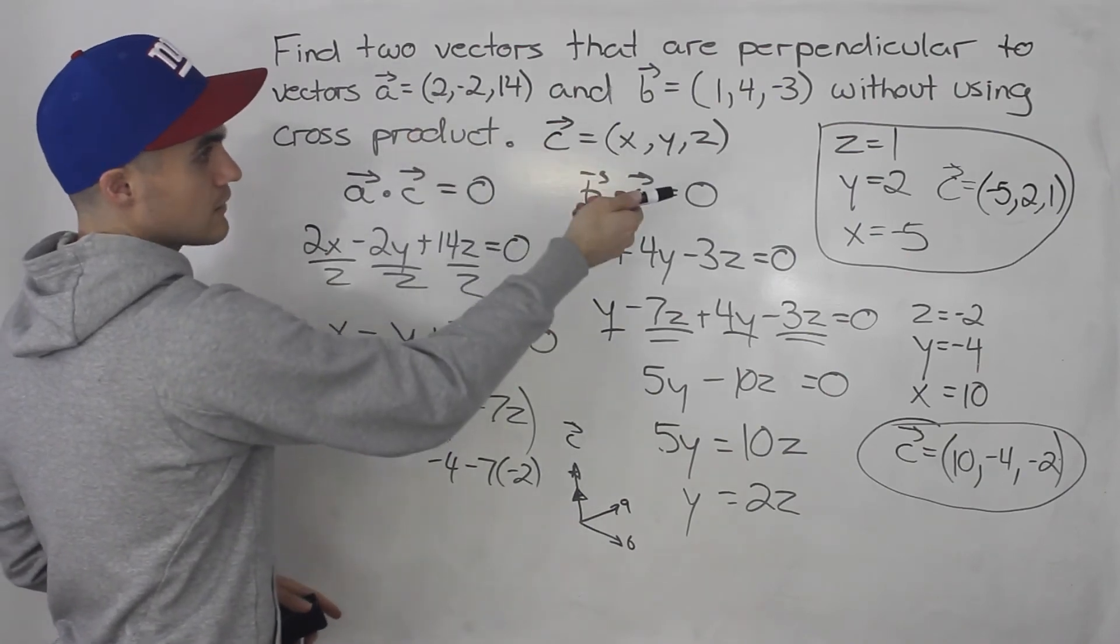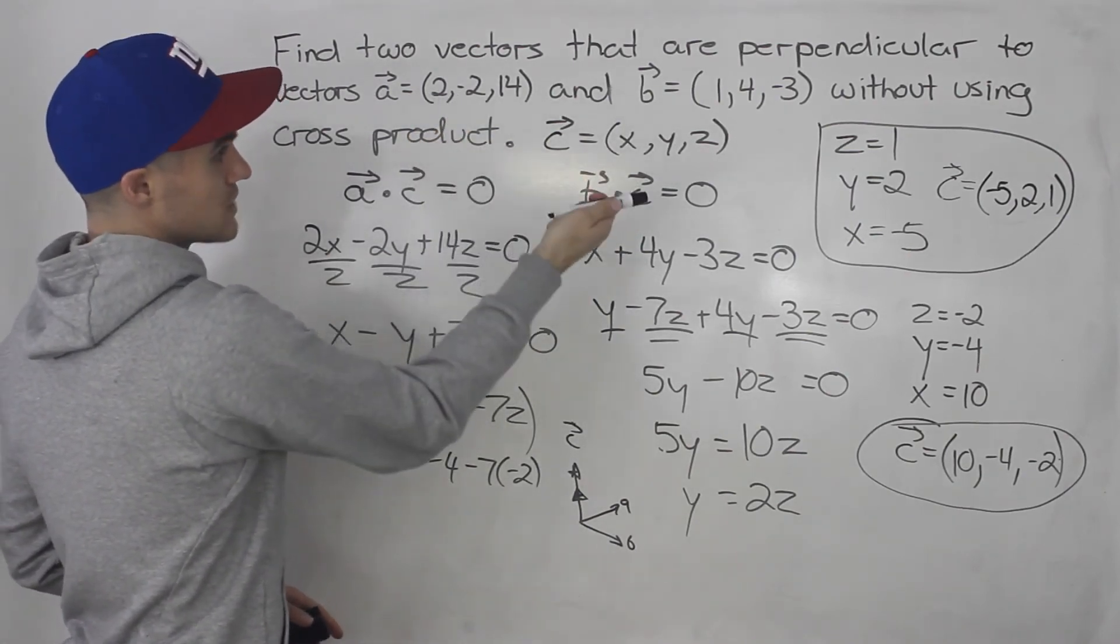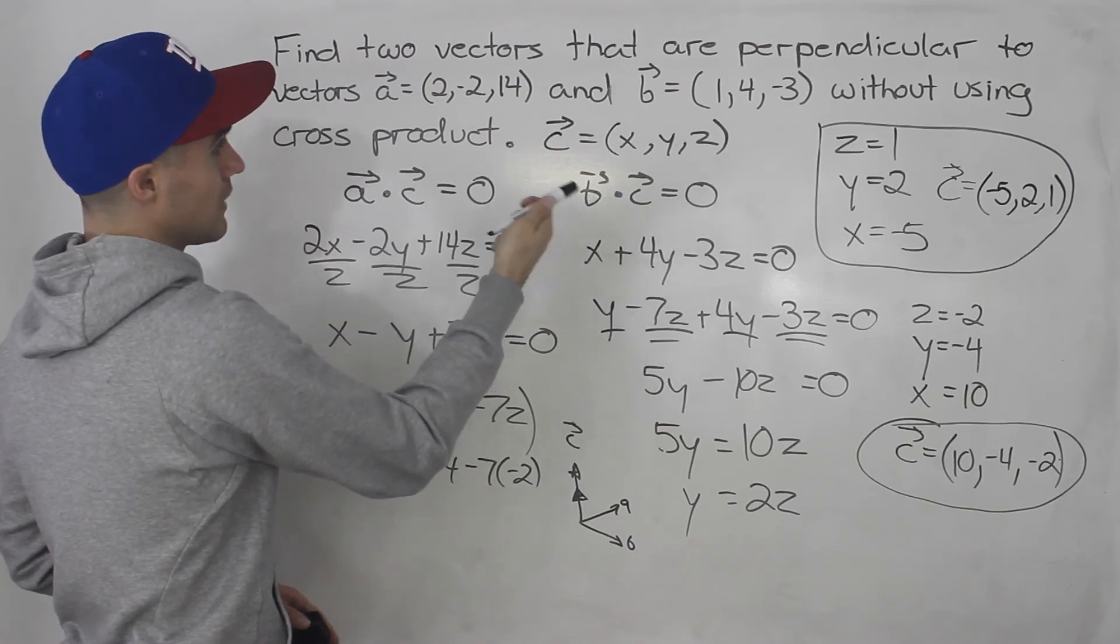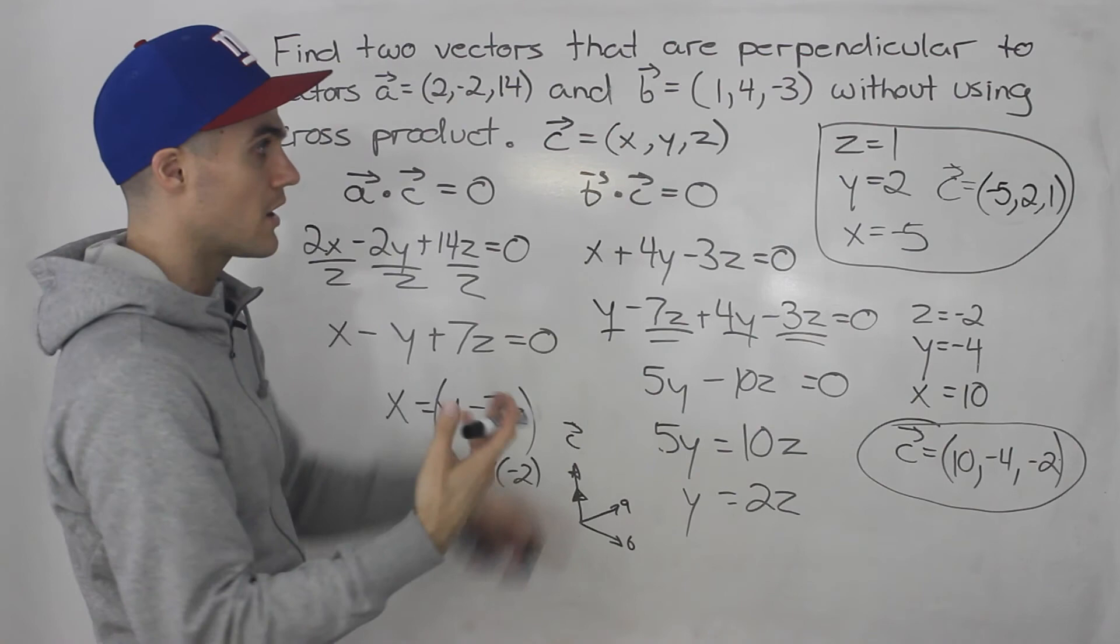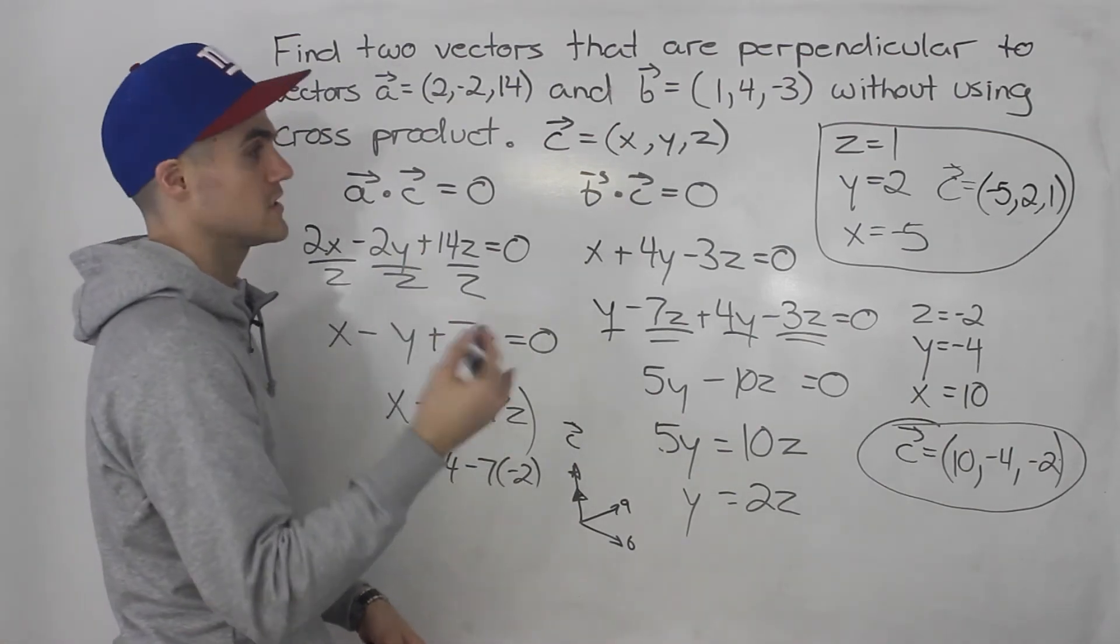So 2 times negative 5 is negative 10. Negative 2 times 2 is negative 4. So that would be negative 14 if we add those up. And then 14 times 1 is positive 14. Negative 14 plus 14 is 0.